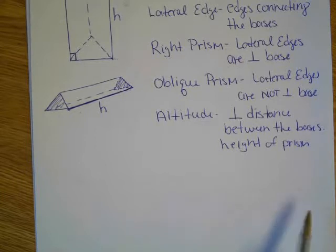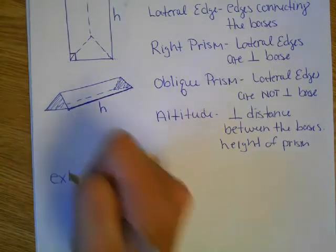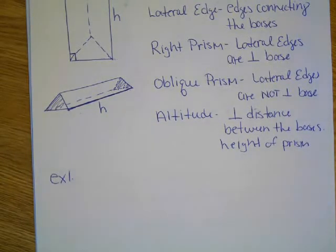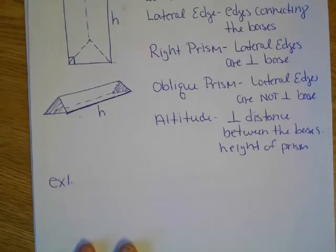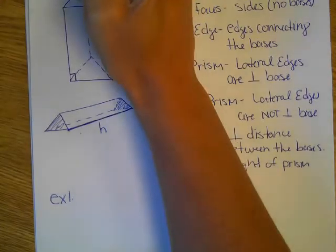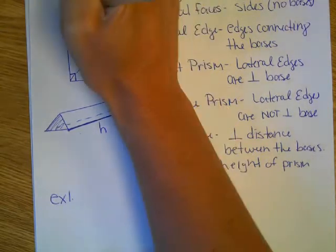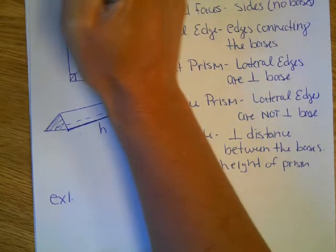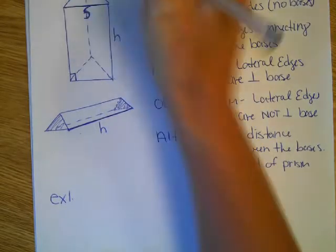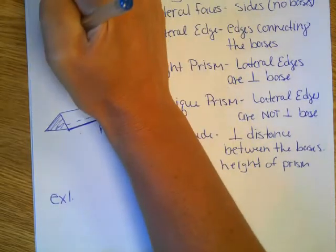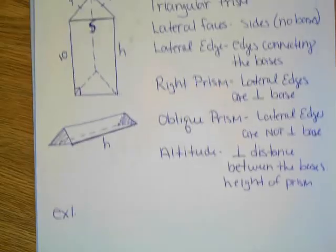So if we take this prism here, we'll go with number one. Let's look at, let's say this was an isosceles triangle here, where the base, the triangle was four, four, and let's go five here. And then the height, let's go a 10.